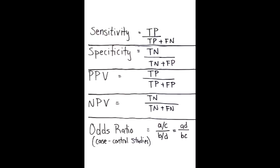What is the equation for positive predictive value? Positive predictive value is true positive over true positive plus false positive.